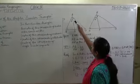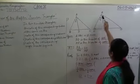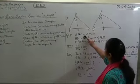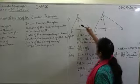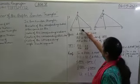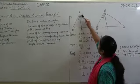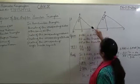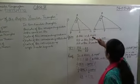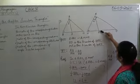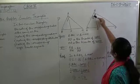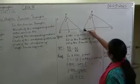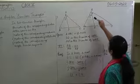Here we have triangle ABC and triangle MNO, which are similar to each other. AD is the bisector of the vertical angle A, meaning AD bisects angle BAC. MP is the bisector of the vertical angle M, meaning MP bisects angle NMO — this whole angle.